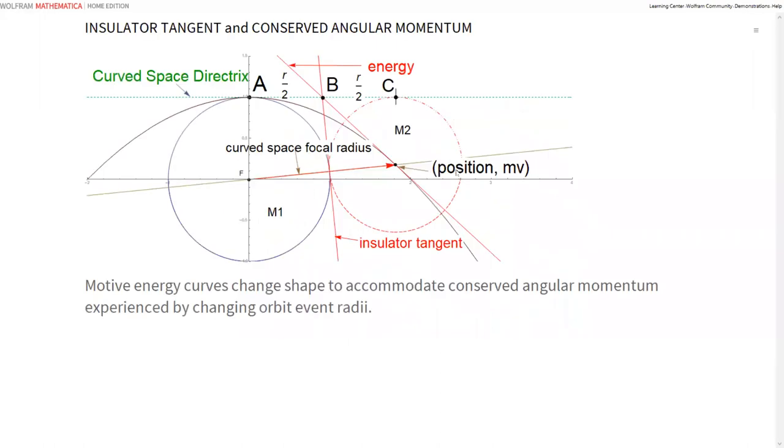We're doing the same thing again. I got an insulator tangent. This is a high energy tangent. And it meets here in the middle of the displacement radius. But I'm explaining that the motive energy curves change shape. The low energy curve was bigger than this. The high energy curve is a lot smaller. They change shape to accommodate conserved angular momentum experienced by changing orbit event radius.